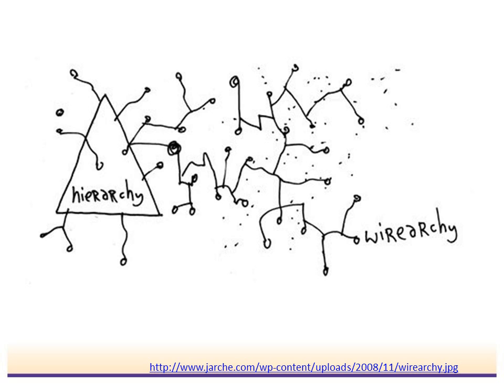John Husband has come up with this term, wirearchy, to describe the framework and the relationship that we have with information in the internet age. With information accessible to us 24 hours a day, 7 days a week through online tools, we don't need to rely on the hierarchy anymore. So through being connected with people and resources, we can move from that hierarchy framework to a wirearchy framework and be much more active in our learning and professional development.